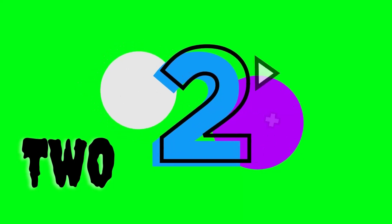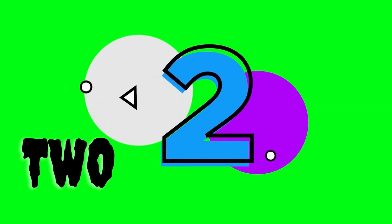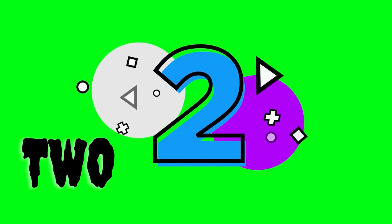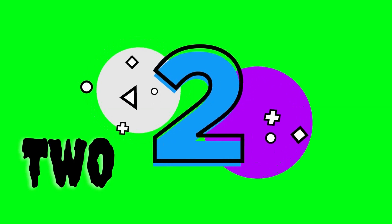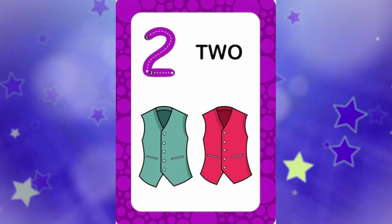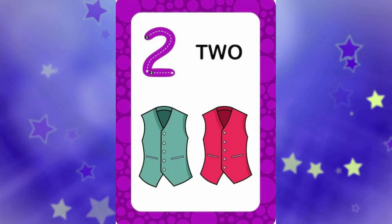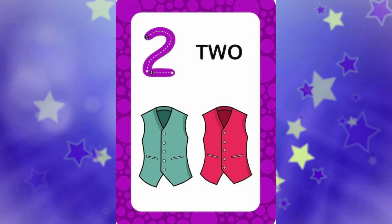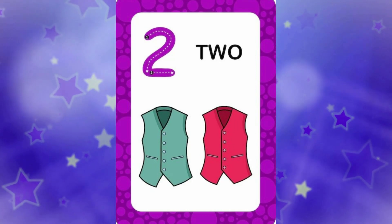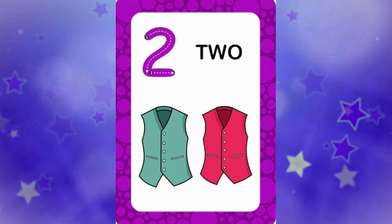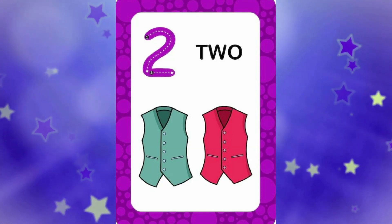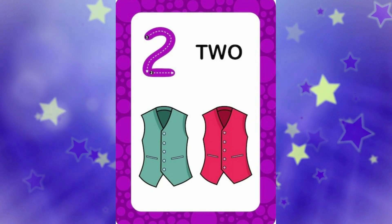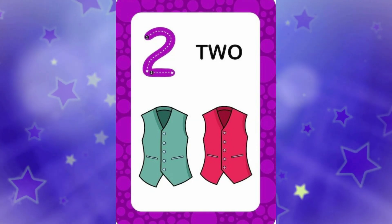Number 2. T-W-O, 2. Tell me children, what do you see in the picture? Yes, we can see waistcoats. So let's point at the picture and count along: 1 and 2. 2 waistcoats.